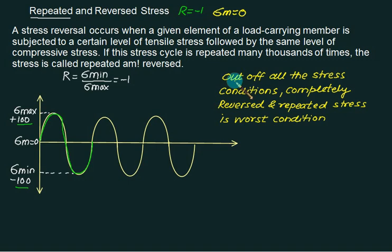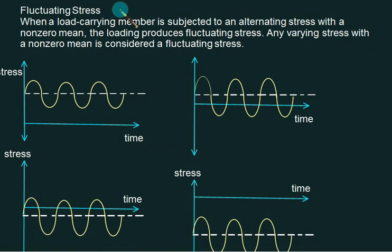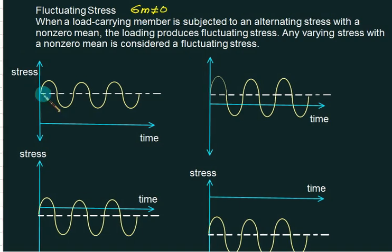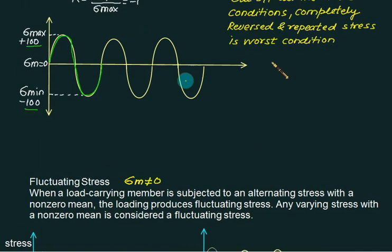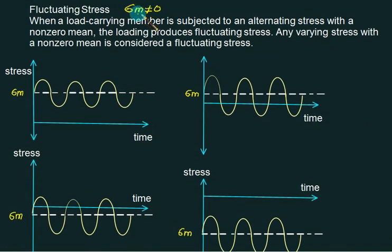When r equals minus 1, sigma mean equals zero. This is the worst condition for any problem, and it is expected that the life of this component is least. Further classification is made for any value of r where sigma m is not equal to zero. That type of stress is called fluctuating stress. So for fluctuating stresses, sigma m will not be equal to zero.